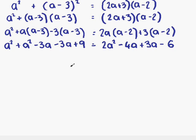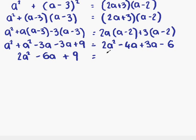Now we can start to simplify by collecting like terms. On the left, we have a squared plus a squared which is 2a squared, then minus 3a minus 3a which is minus 6a, and finally plus 9. On the right side, we have 2a squared — nothing to combine with that — then minus 4a plus 3a which is minus a, and finally minus 6.